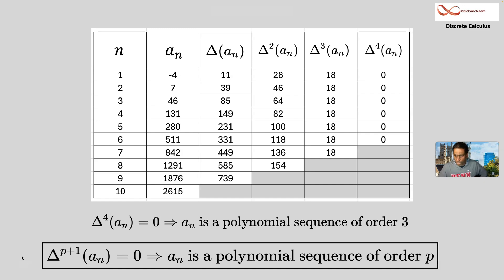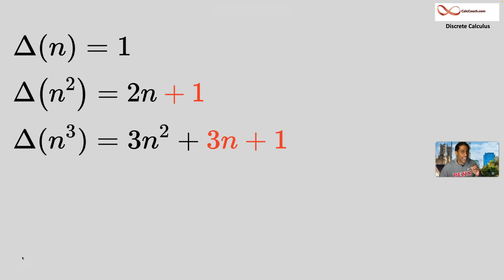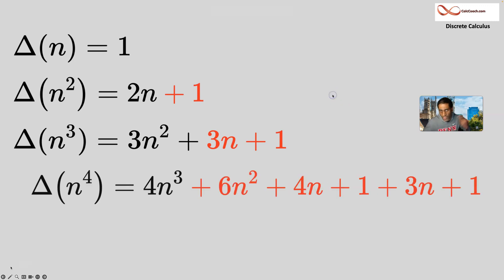Let's do a recap. If we apply it to n, we get one. Forward difference applied to n, we get one. Forward difference applied to n squared, we get 2n plus 1. Forward difference applied to n cubed, we get 3n squared plus 3n plus 1. Forward difference applied to n to the fourth, we didn't do it, but the forward difference applied to n to the fourth is going to be equal to all that.